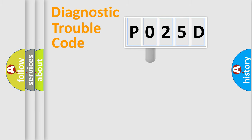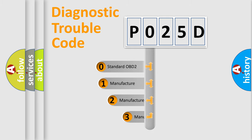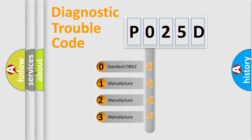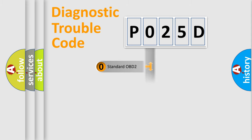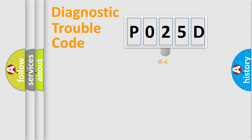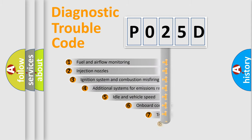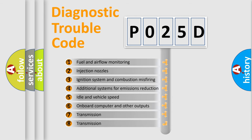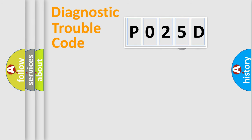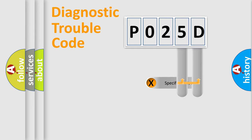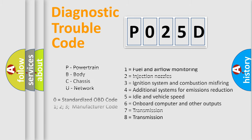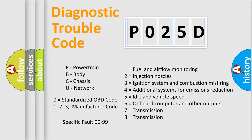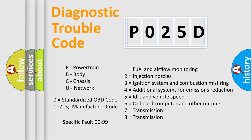This distribution is defined in the first character of the code. If the second character is expressed as zero, it is a standardized error. In the case of numbers 1, 2, or 3, it is a manufacturer-specific error. The third character specifies a subset of errors. This distribution is valid only for the standardized DTC code, and only the last two characters define the specific fault of the group.